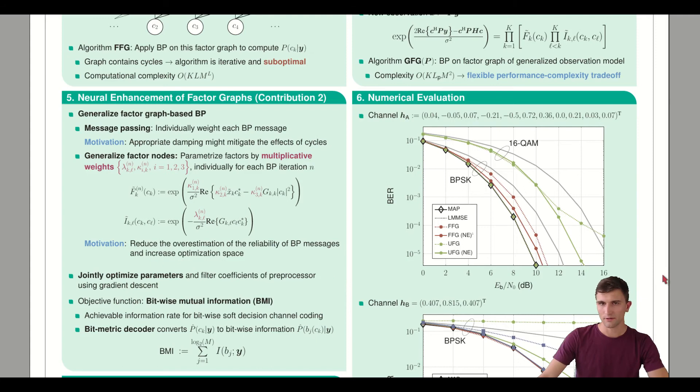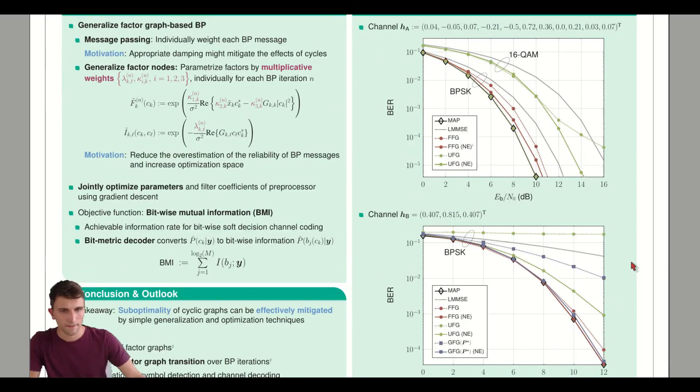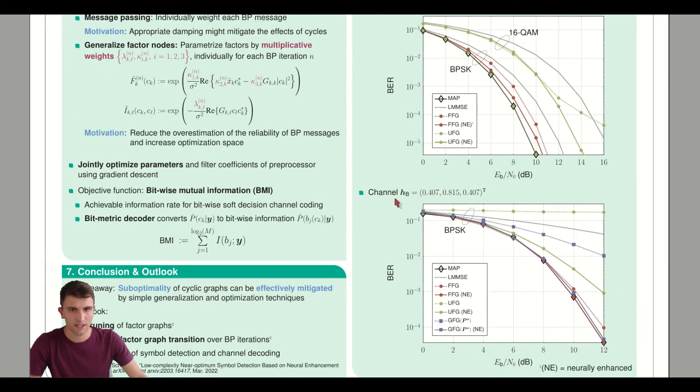Let's look at the results. Starting with channel HP, the dotted line was the generalized observation model without neural enhancement. The solid lines show the improvements with neural enhancement. As you can see, we can nearly reach the optimum performance of MAP.